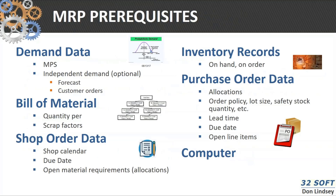There are some prerequisites for MRP. First of all, you have to have demand data — we talked about the fact that you have the independent demand items and you need to forecast that. You've got your bill of material, which we'll look at in just a second — quantity per, scrap factors, etc. — and your shop order data, because that's what...